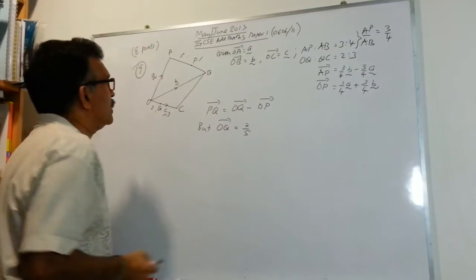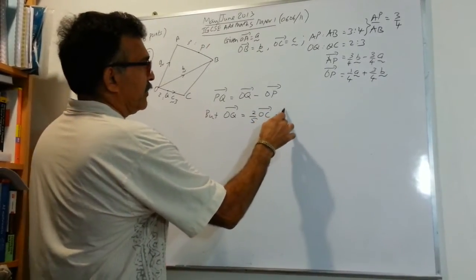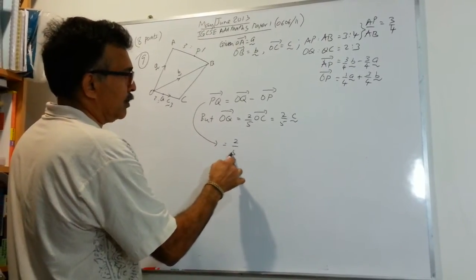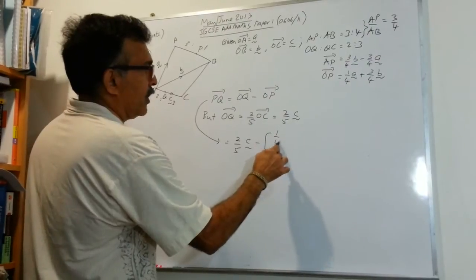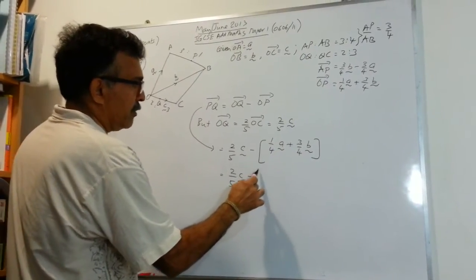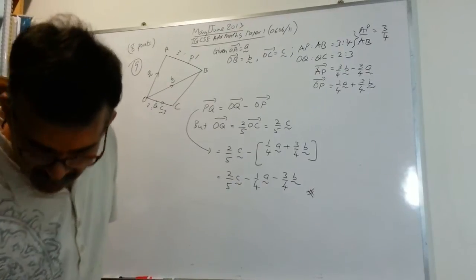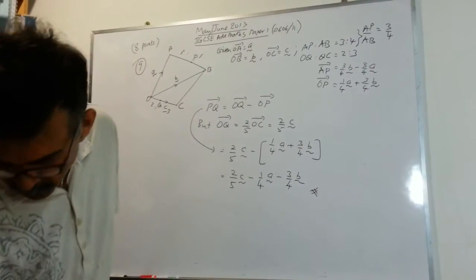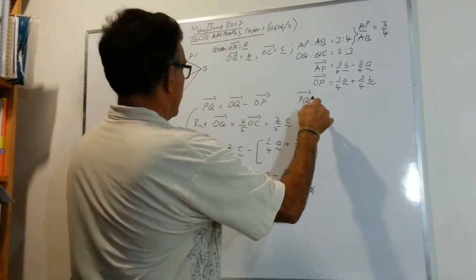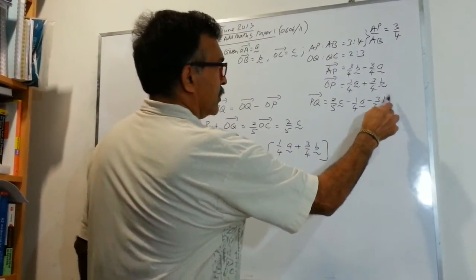OQ will be, there are 5 parts to the line and OQ is 2 parts. So, 2 out of 5 of OC. I'll have 2 over 5 C. Now, just plug in. PQ equals to 2/5 C minus 1/4 A plus 3/4 B. And, if you open this up, you'll get 2/5 C minus 1/4 A minus 3/4 B. And, we are done. We have PQ will be equal to 2/5 vector C minus 1/4 vector A minus 3/4 vector B.